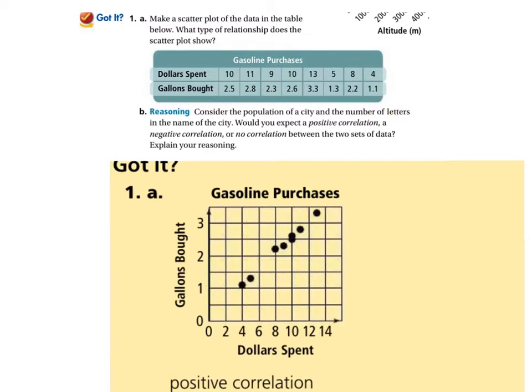So consider the population of a city and the number of letters in the name of a city. Would you expect a positive correlation and negative correlation or no correlation? I would expect to have no correlation. I don't think the number of letters in the city has anything to do with the number of people there. Like, you know, if you named a city supercalifragilisticexpialidocious, if I could actually even say that, there'd be like a billion people there? No. It has nothing to do with it at all. So no correlation. You have stuff all over the place.